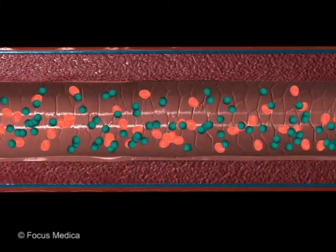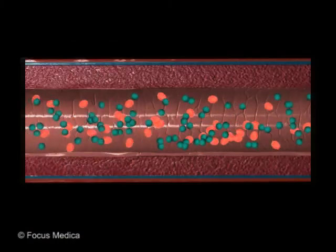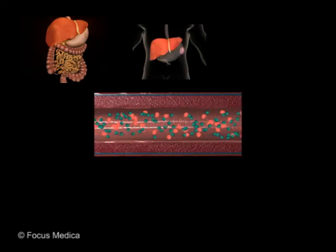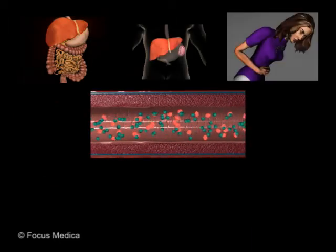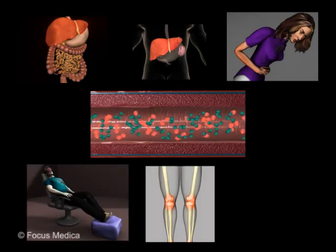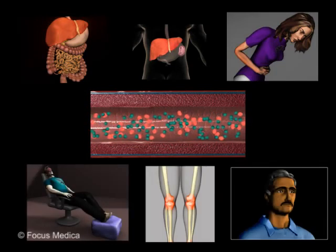Commonly observed symptoms of hemochromatosis include hepatomegaly, splenomegaly, abdominal pain, chronic fatigue, joint pain, and bronzing of skin.